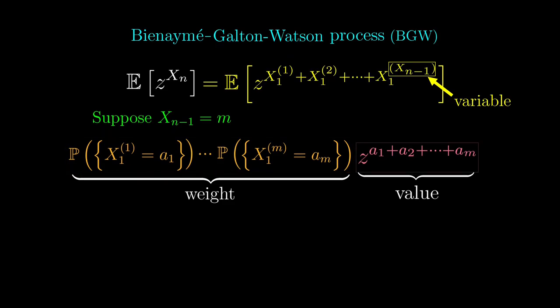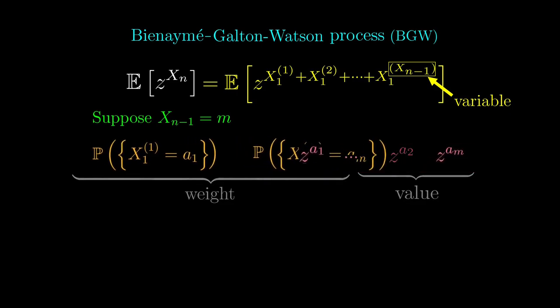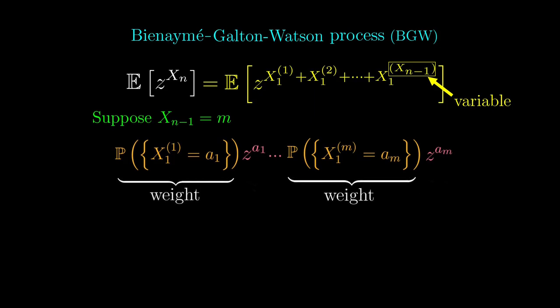So we can change this weight into a product of probabilities as shown here. Similarly, we can rewrite the value here into a product of these powers. Rearranging, we get a product of terms of the form of weighted values. So if we first sum up all the values of a1, then only these two terms will be affected. Summing terms of this form is precisely the weighted average of z to the x1, which is the generating function for x1.